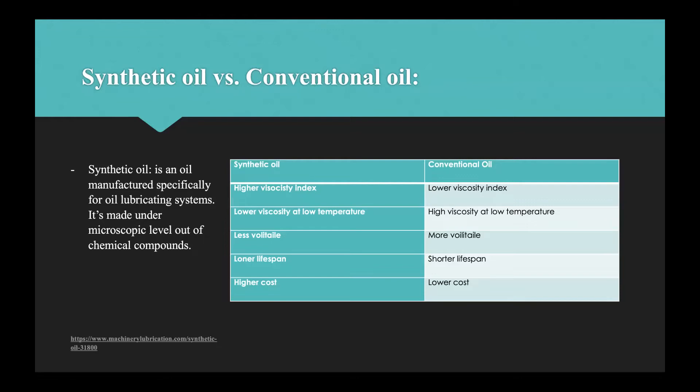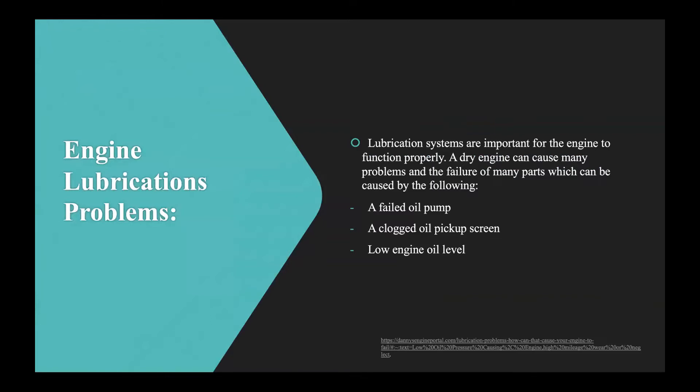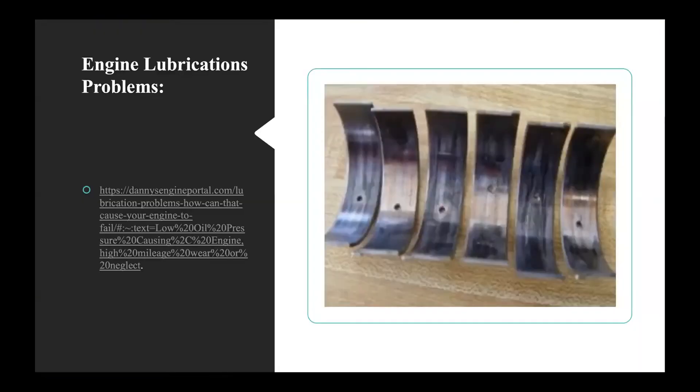Now we can talk about engine lubrication problems. Lubrication systems are important for the engine to function properly. A dry engine can cause many problems and the failure of many parts which can be caused by the following: first a failed oil pump, second a clogged oil pickup screen, third low engine oil level. This picture shows a bearing inside of the engine and as you can see the bearing is shiny and it has marks of wear. This happens when a lack of lubrication happens or a lack of oil happens inside the engine. This can cause an engine failure or bad performance in the engine, so we want to prevent that by having enough oil in our lubrication system.